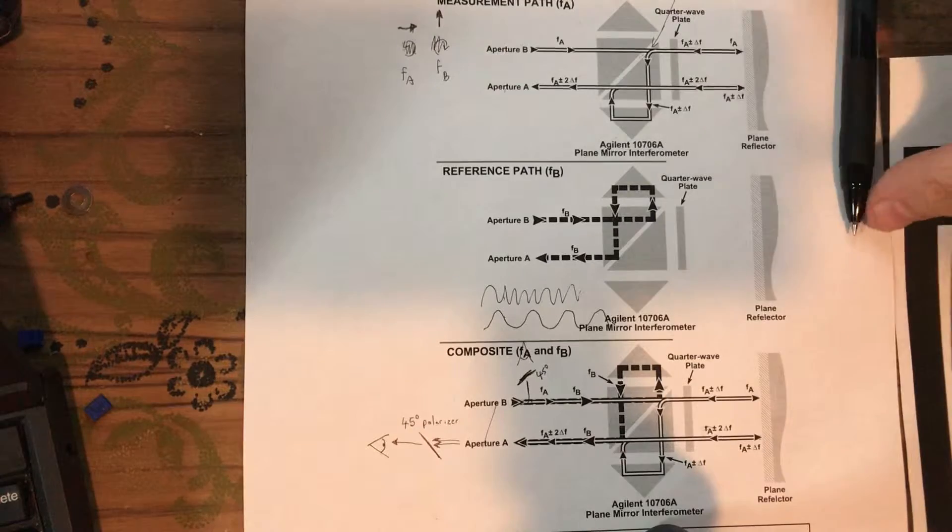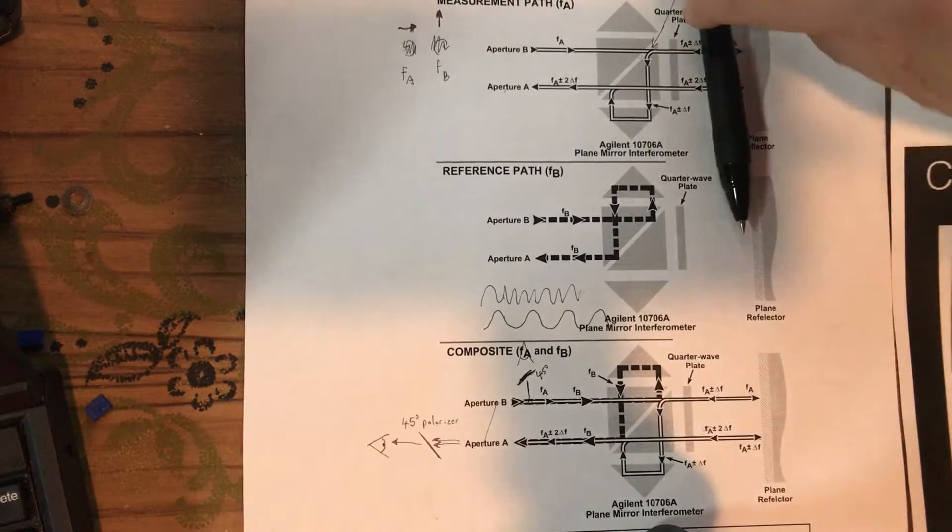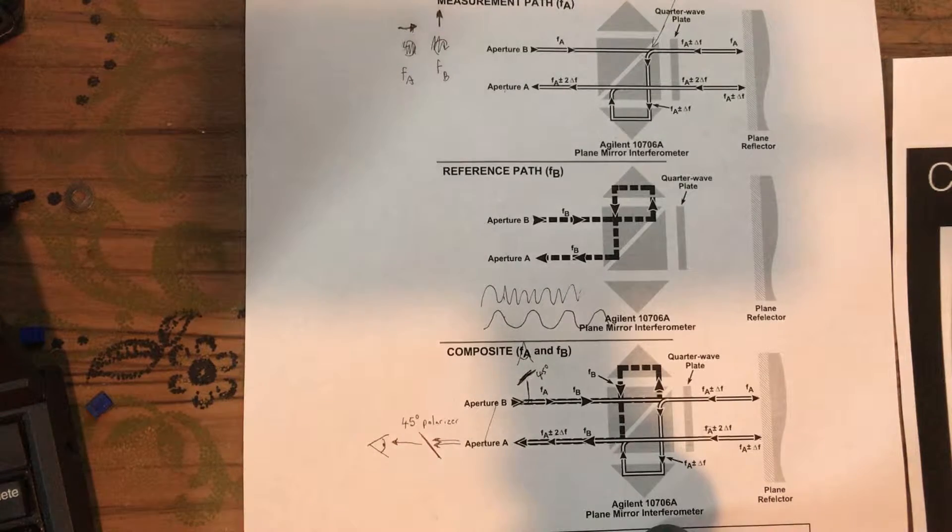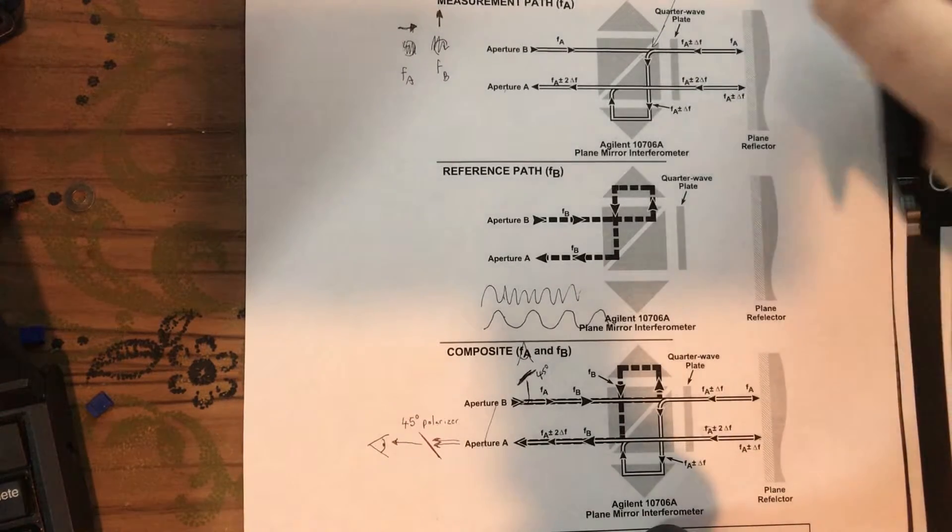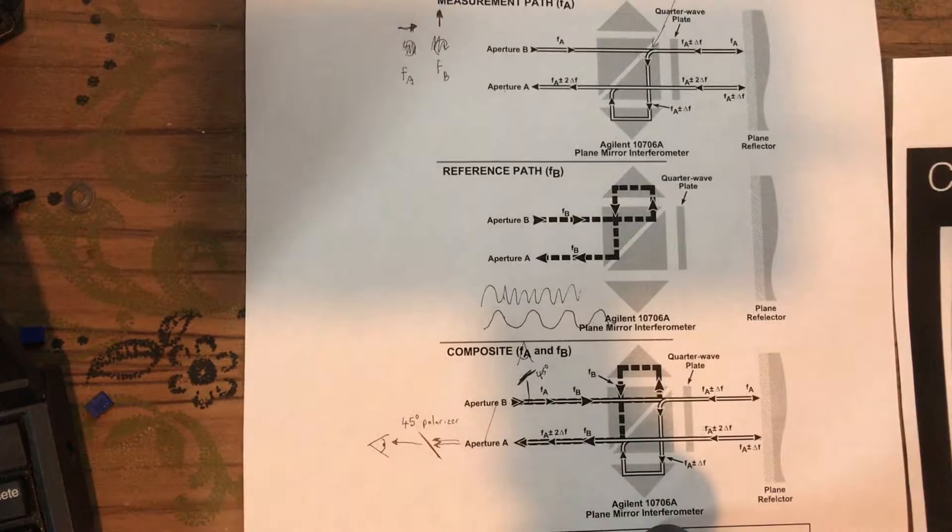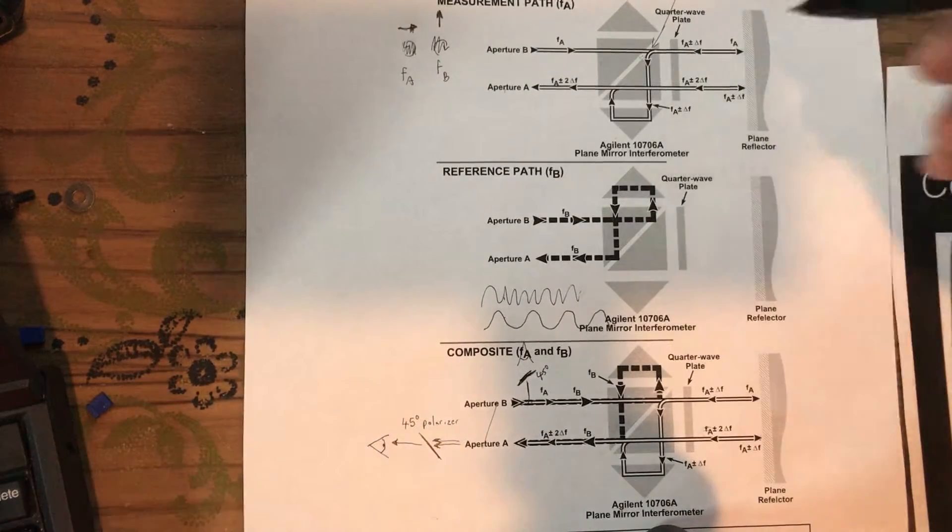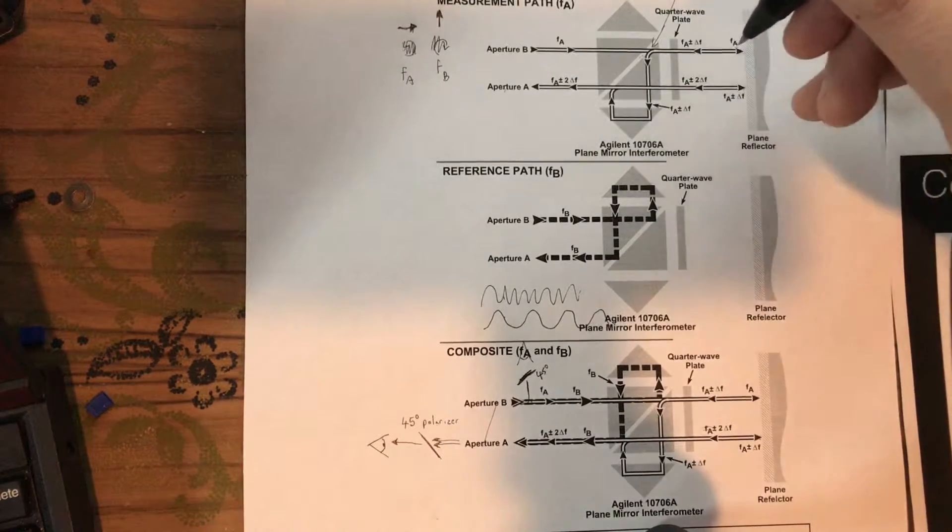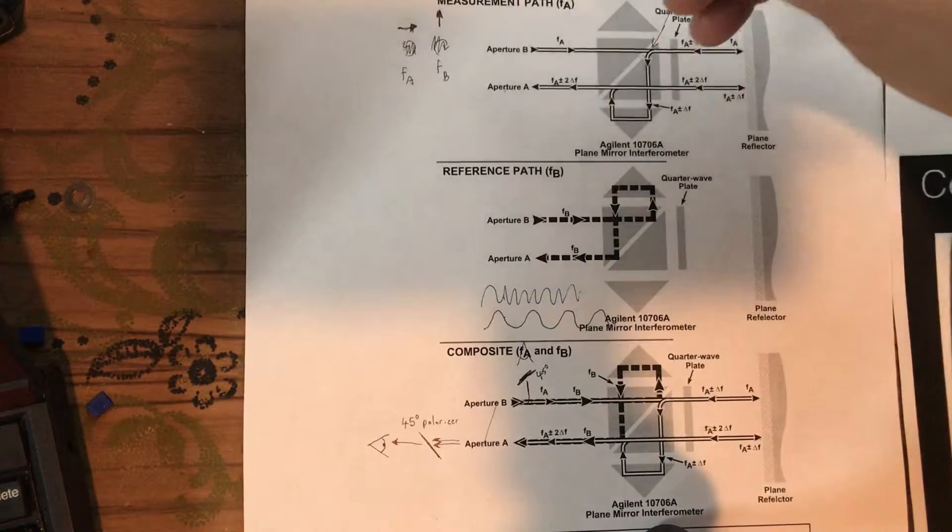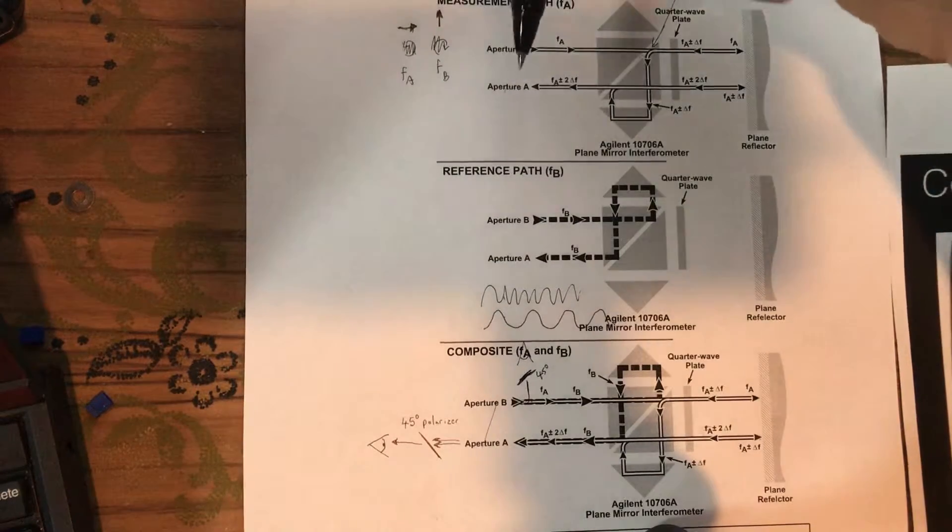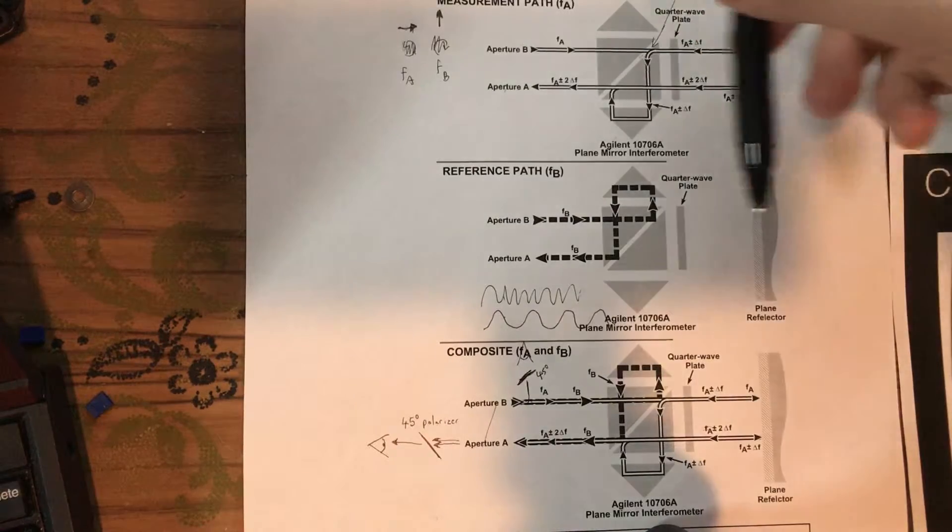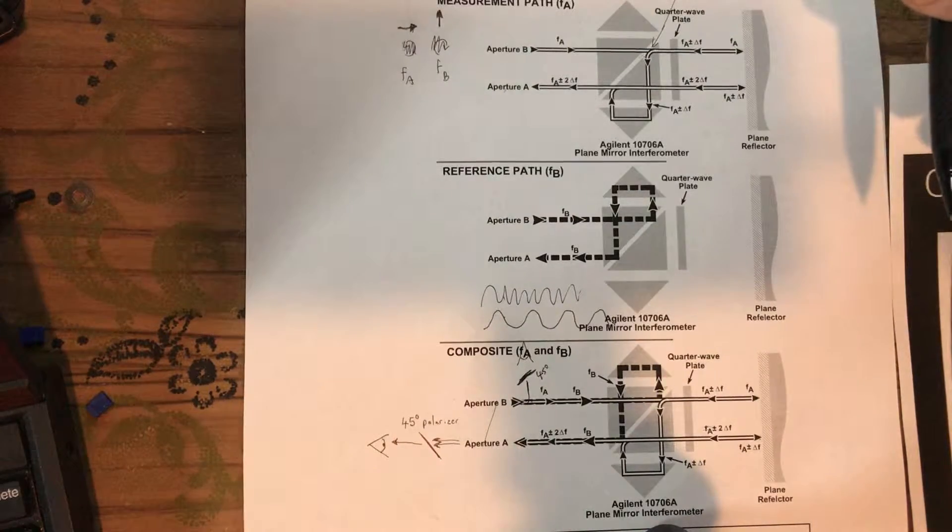So if this surface is moving towards the beam, that slightly increases the frequency. And if it's moving away from the beam, it's going to slightly decrease the frequency. We're going to be measuring that difference in frequency between the original signal that we get in and this doppler shifted beam.